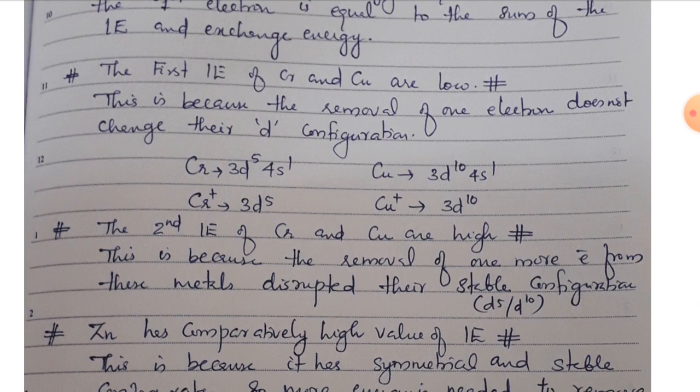For Cr, removing the first electron gives CR+ with a D5 configuration. In the copper case, Cu has 3d10-4s1, so Cu+ has the 3d10 configuration. These are stable configurations — half-filled for chromium and completely-filled for copper.